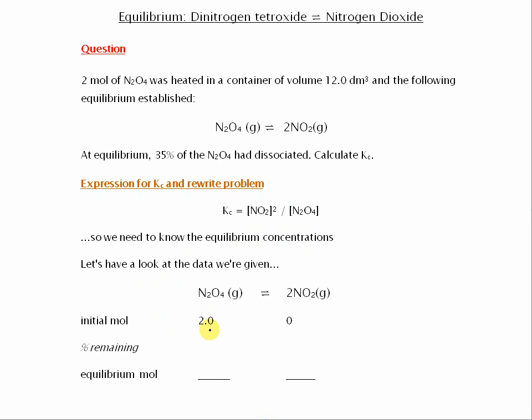We're told that initially there's 2 mol of the N2O4, none of the NO2. And then you're told that 35% of the N2O4 had dissociated, which means that 65% of it remains. Well, 65% of 2 is 1.3. So we already know that the equilibrium mole of N2O4 is 1.3.